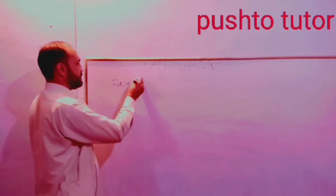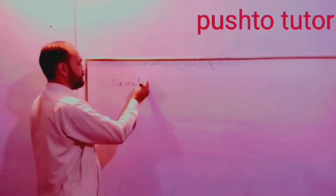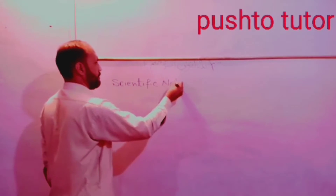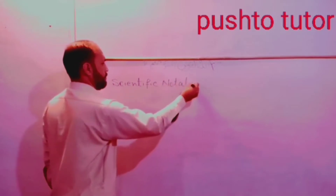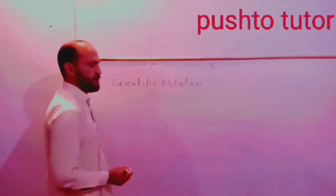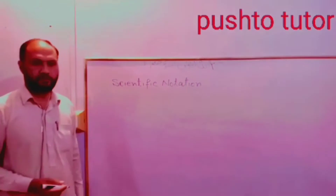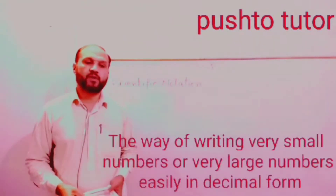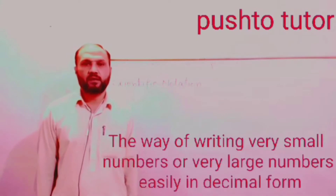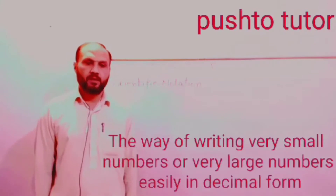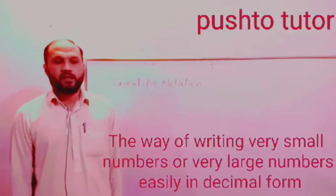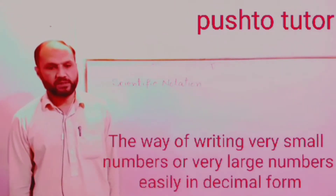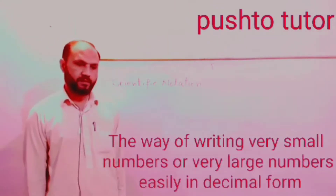Scientific Notation, also called Standard Form: the way of writing very small numbers or very large numbers easily in decimal form is called Scientific Notation or Standard Form.